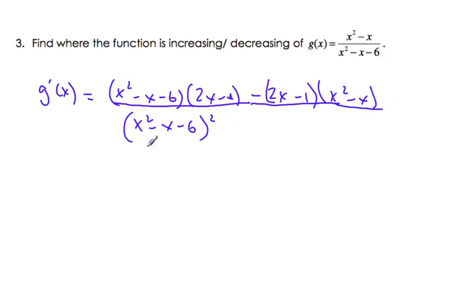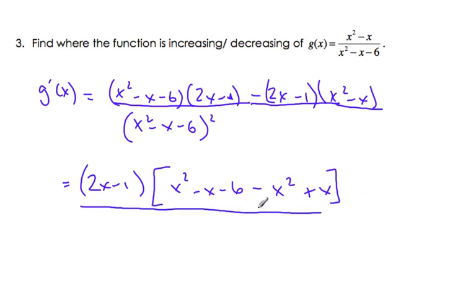I'm going to factor the top part. When I factor the top, I pull out 2x - 1, and I have x² - x - 6 minus x² plus x. This is all over the denominator squared.